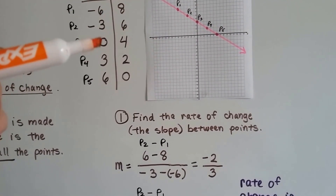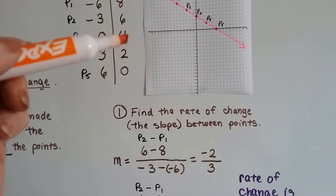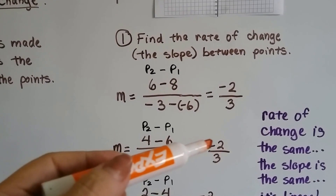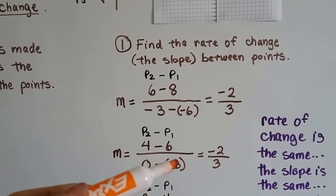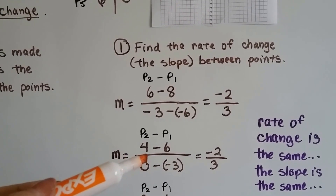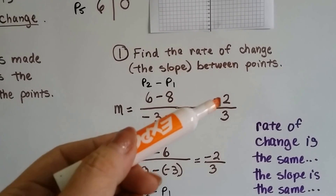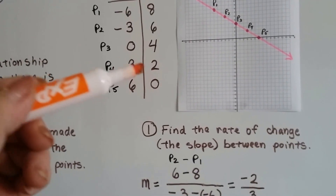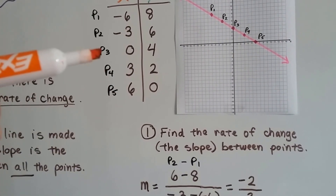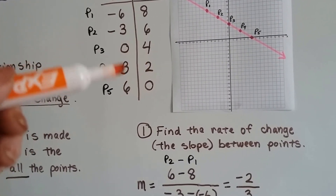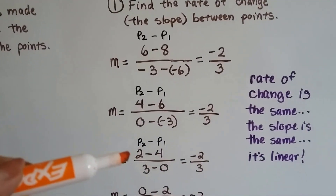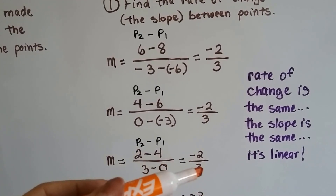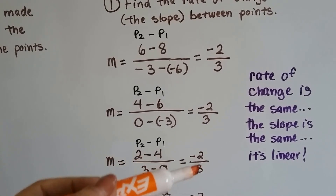Now we're going to compare 3 to 2. So we've got 4 take away 6 and 0 take away negative 3. 4 take away 6 is negative 2, and 0 take away negative 3 — we add the opposite — so it's 0 plus 3, we get 3. Look, it's the same: negative 2 over 3. Now we're going to compare 0.4 to 0.3. We have 2 take away 4 and 3 take away 0. 2 take away 4 is negative 2, and 3 take away 0 is 3. Again, we have negative 2 over 3.